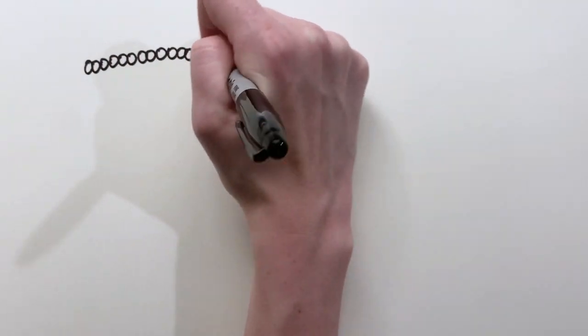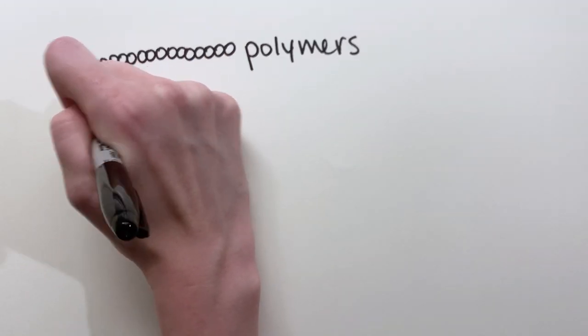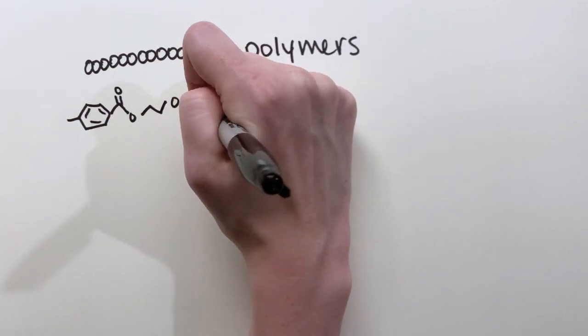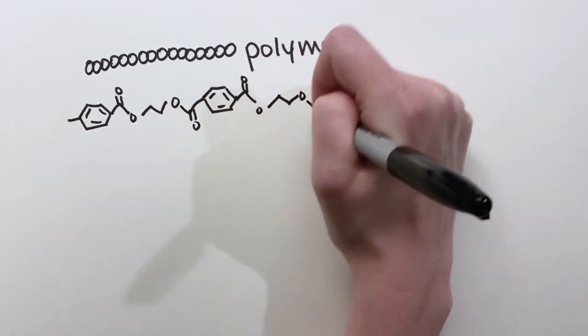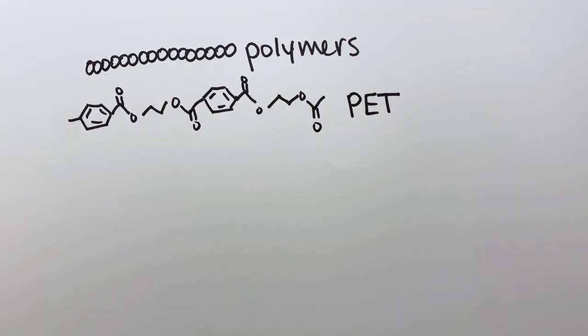Plastics are often made of long-chained molecules called polymers. There is a huge variety of plastics in the world. The plastic in water bottles is made of a polymer called PET, which is colorless, strong, and versatile. Polymers can be found in nature, too.